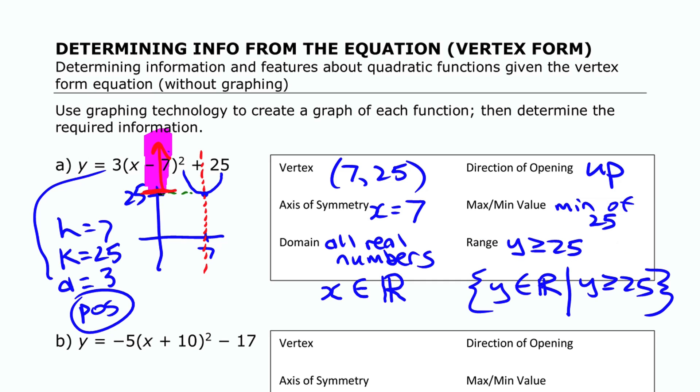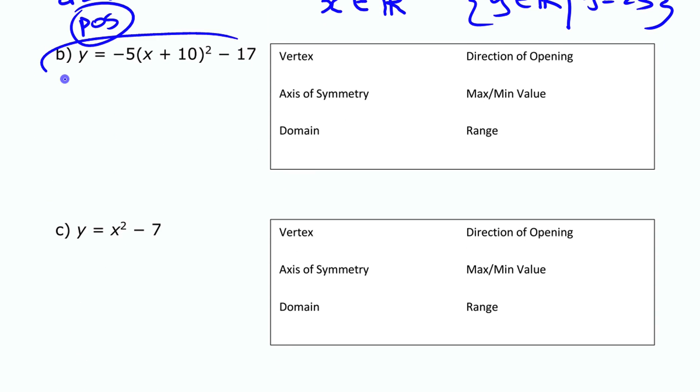All right, let's look at another one. This second one here, we're going to go through a little bit more quickly here. We have a is negative five. So again, it's negative means it is going to open down. We have that h here is negative 10, means that the entire graph has been shifted to the left 10 units.